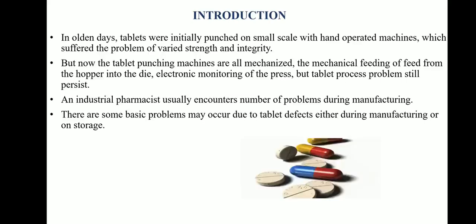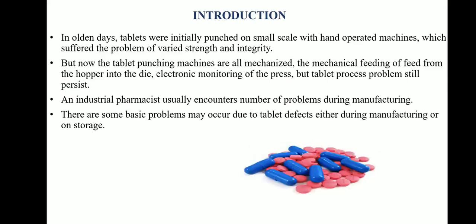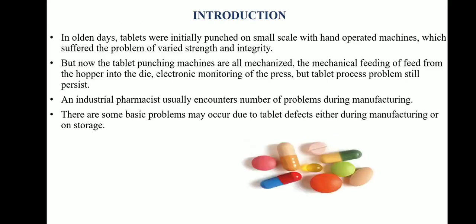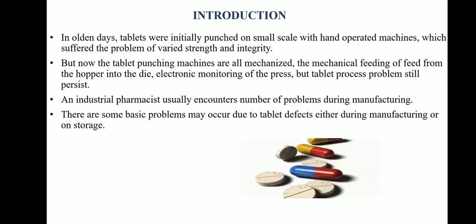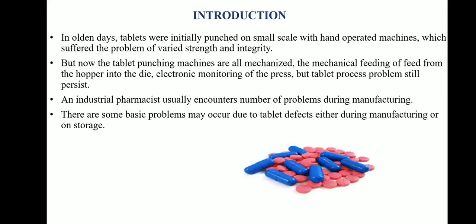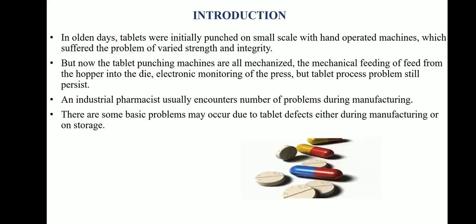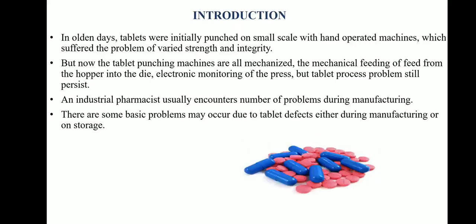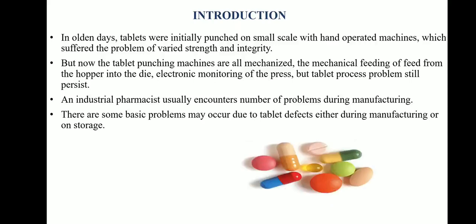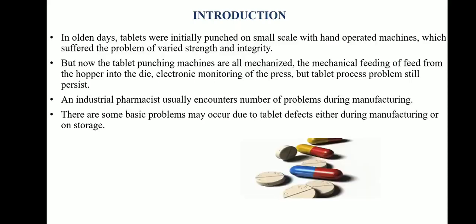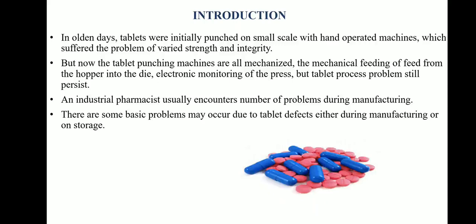An industrial pharmacist usually encounters a number of problems during manufacturing. Before the development of machines useful in tablet processing, tablets were punched on a small scale using hand-operated machines, which led to varied strength and quality. Now the machines are mechanized, but problems still occur. There are some basic problems that may occur due to tablet defects either during manufacturing or on storage. Tablet defects are deficiencies usually encountered in tablet formulation, like capping, lamination, etc., which we will see in further slides.